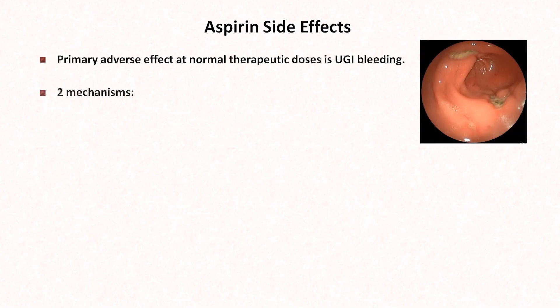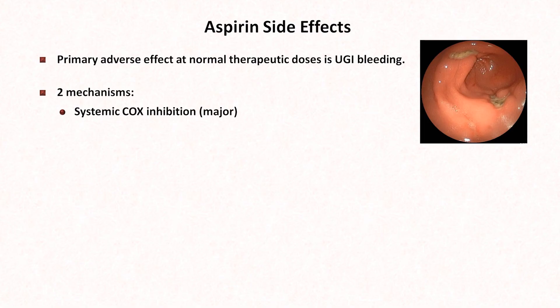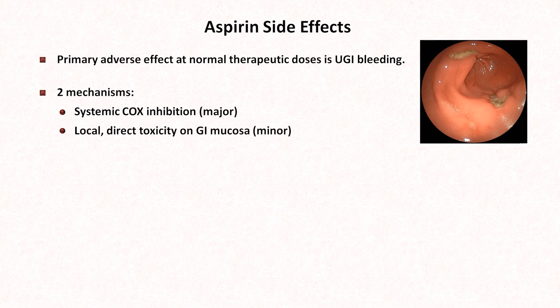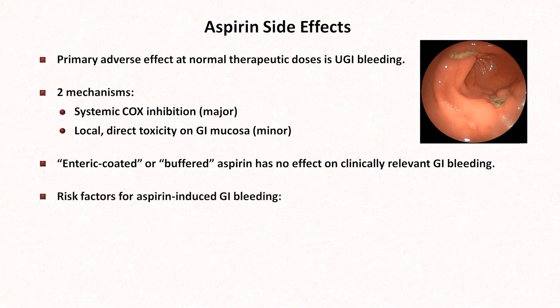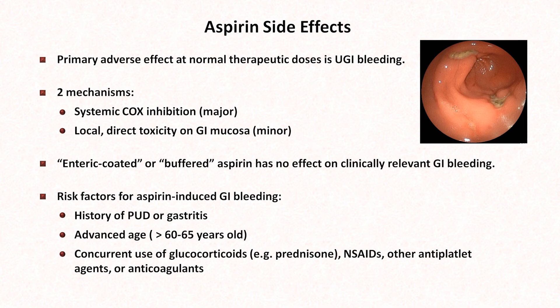At normal therapeutic doses, including relatively high doses for pain relief, the primary adverse effect is upper GI bleeding. There are two mechanisms: the major mechanism is systemic COX inhibition, because the healthy gastric and duodenal mucosa constitutively use COX-1 to produce mucosal protective prostaglandins. The minor mechanism is local direct toxicity on the GI mucosa. Because the major mechanism is systemic, enteric-coated or buffered aspirin has no effect on clinically relevant GI bleeding, though there is anecdotal evidence these formulations may reduce subjective GI upset. Risk factors include history of peptic ulcer disease or gastritis, advanced age, concurrent use of steroids, NSAIDs, other antiplatelet drugs, anticoagulants, or alcohol.